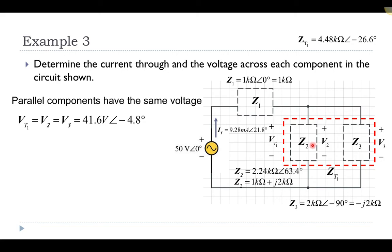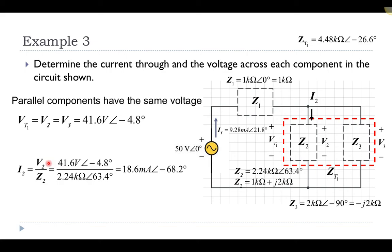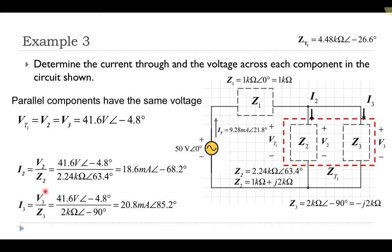Knowing the voltage across each parallel component, I can calculate the branch currents. The current through impedance Z2 is the voltage across it divided by Z2: 41.6 volts at minus 4.8 degrees divided by 2.24 kilo-ohms at 63.4 degrees gives 18.6 milliamps at negative 68.2 degrees. Similarly, the current through Z3 is the same voltage divided by the impedance of Z3, giving 20.8 milliamps at 85.2 degrees.